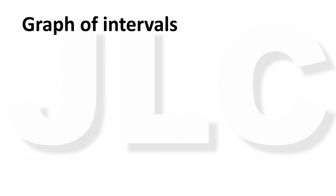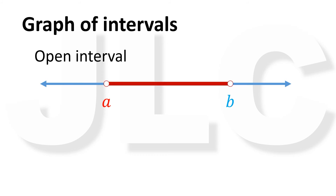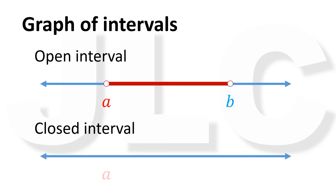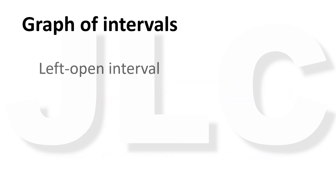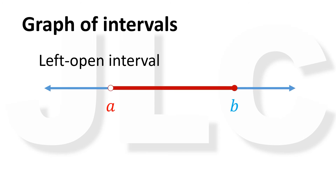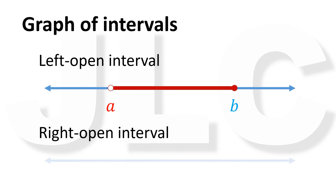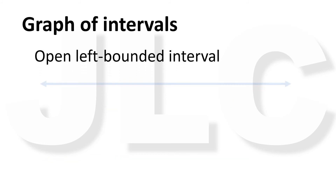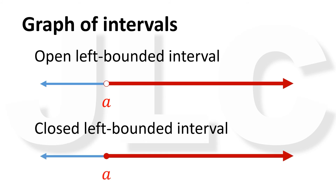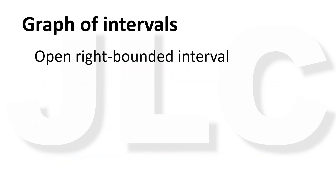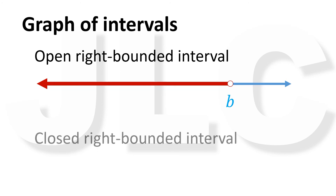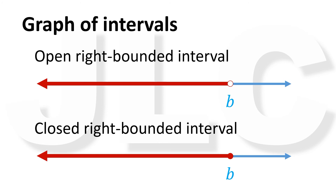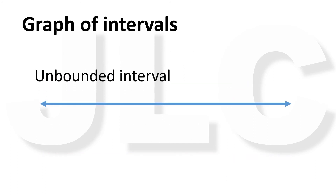Intervals correspond geometrically to line segments on the real line. An open interval is represented by a line segment whose endpoints are open dots. In a closed interval, we use solid dots. In a left-open interval, the left endpoint is an open dot and the right endpoint is a solid dot. In a right-open interval, the right endpoint is an open dot and the left endpoint is a solid dot. In a left-bounded interval, we draw a ray to the right; the endpoint is an open dot if open and a solid dot if closed. In a right-bounded interval, we draw a ray to the left; the endpoint is an open dot if open and a solid dot if closed. An unbounded interval is represented by a line.